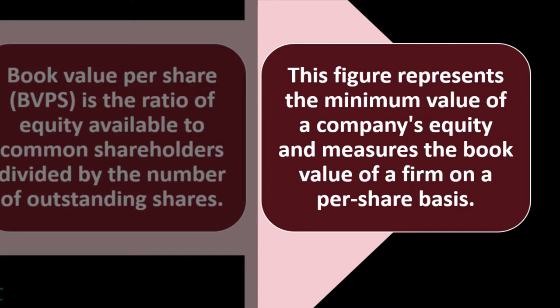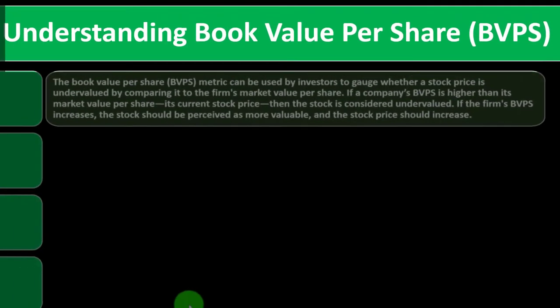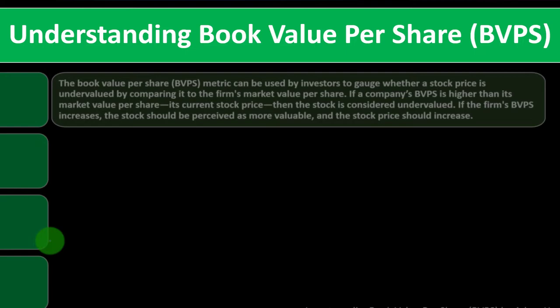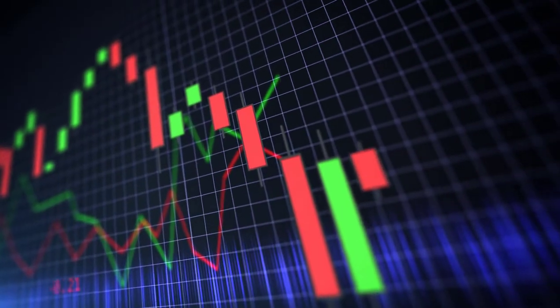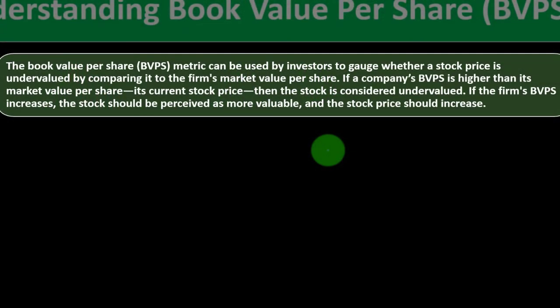This figure represents the minimum value of a company's equity and measures the book value of a firm on a per share basis. The book value per share metric can be used by investors to gauge whether a stock price is undervalued by comparing it to the firm's market value per share. The book value is determined from financial statements, while market value is determined by the market for publicly traded stocks. If a company's BVPS is higher than the market value per share — its current stock price — then the stock is considered undervalued.